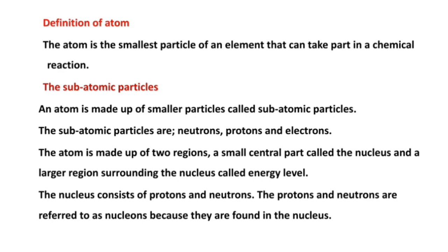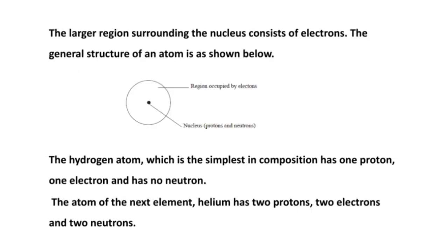The atom is made up of two regions. We have a small central part called the nucleus, and we have the larger region surrounding the nucleus called the energy level. The nucleus consists of protons and neutrons. Therefore, protons and neutrons are referred to as nucleons because they are found in the nucleus. The larger region surrounding the nucleus consists of electrons. The general structure of an atom shows the central region — the nucleus containing the protons and neutrons — and the region surrounding the nucleus called the energy level, which contains the electrons.